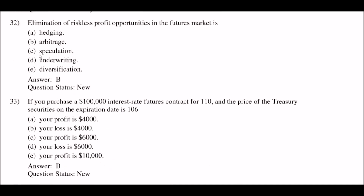Next question: elimination of riskless profit opportunities in the futures market is — option A: hedging; option B: arbitrage; option C: speculation; option D: underwriting; option E: diversification. The right answer is option B: arbitrage. Elimination of riskless profit opportunities in the futures market is arbitrage.